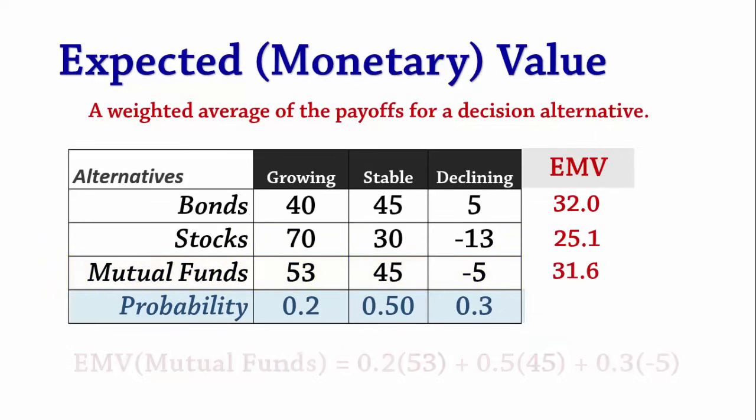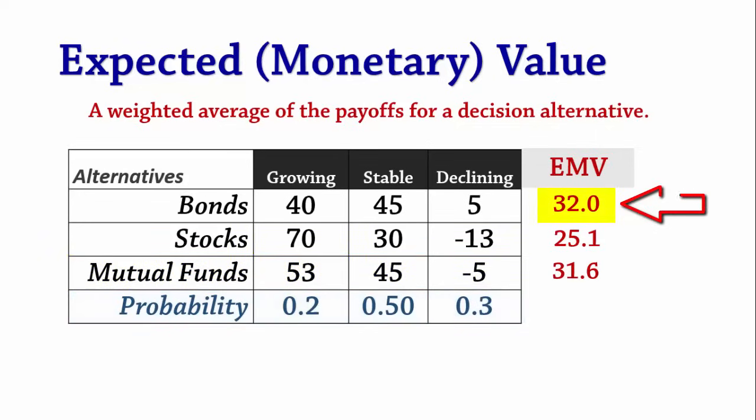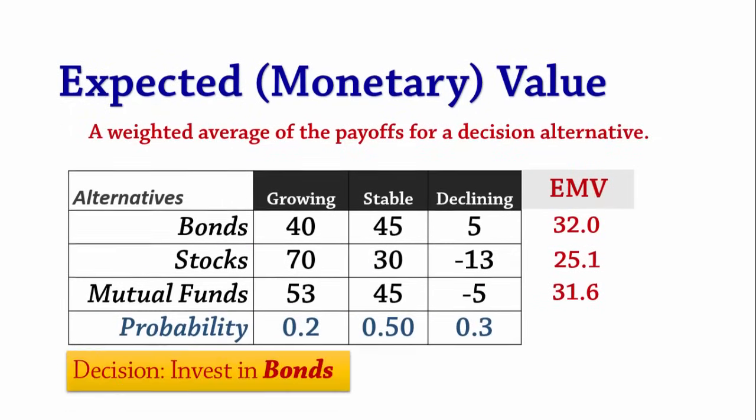The best expected value is 32. Therefore, the decision is to invest in bonds.